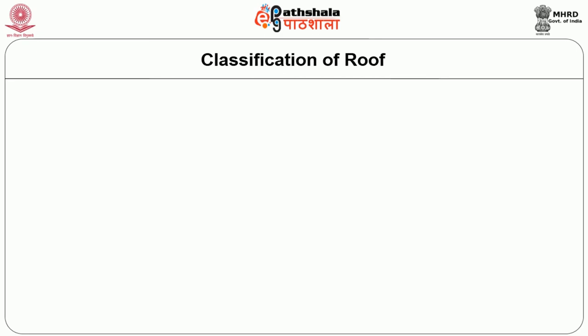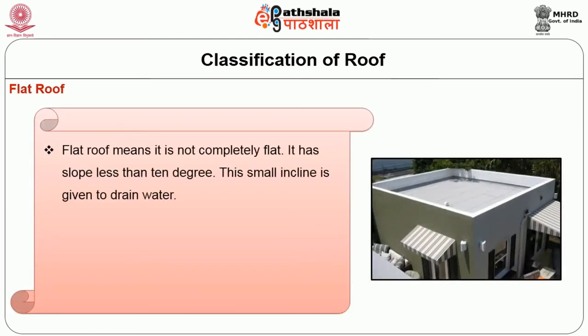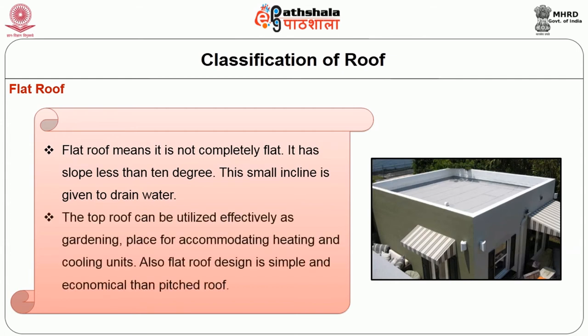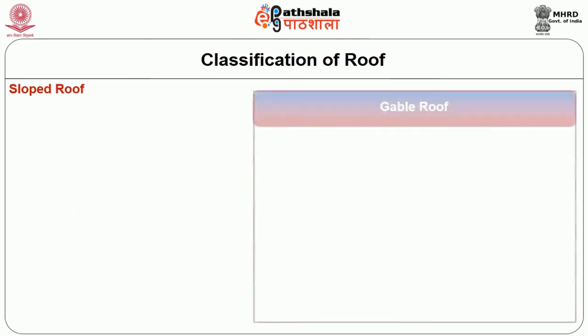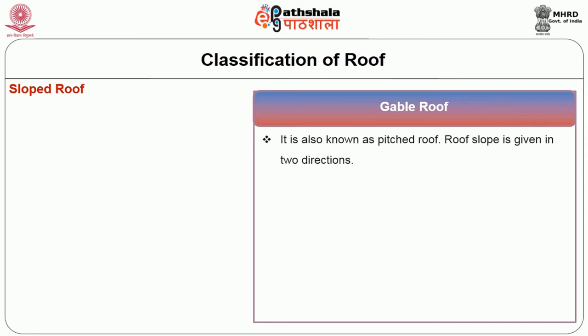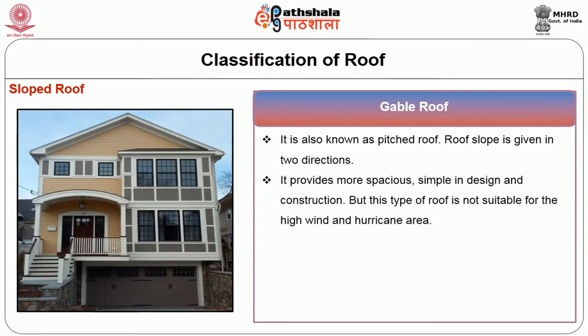Roofs are generally classified into flat roof and pitched or sloped roof. A flat roof is not completely flat — it has a slope of less than 10 degrees. This small inclination is given to drain water. The top of a flat roof can be utilized effectively as a gardening place or for accommodating heating and cooling units. Flat roof design is simple and economical compared to pitched roof. A gable roof, also known as a pitched roof, has roof slope given in two directions, providing more space and being simple in design.